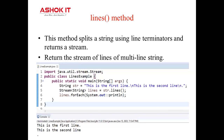It automatically removes any leading or trailing white space from each line before returning them. In this example, with the help of the lines method, it will display the lines. The first line is followed by \n, then the second line followed by \n, and after that one dot.